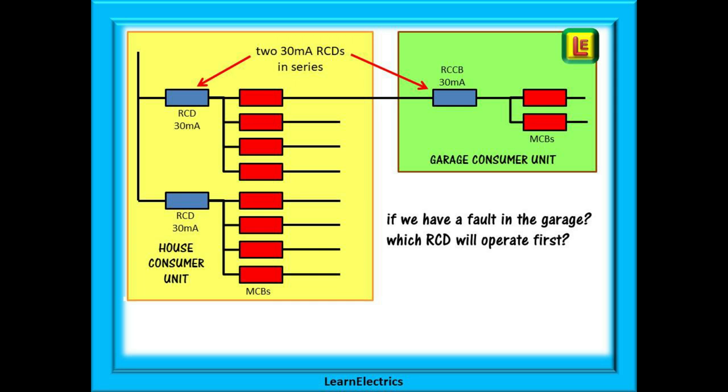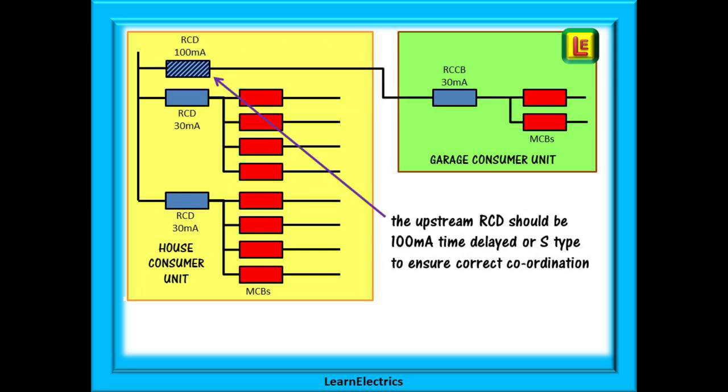We need to be certain that the garage RCCB only will trip. Correct coordination tells us that we should install a separate S type 100 milliamp RCD in the house consumer unit. This way we have achieved our three to one difference between devices. The 100 milliamp device will respond a little slower and the 30 milliamp device will operate first well before the larger device even thinks about it. Only the garage circuits will be affected.